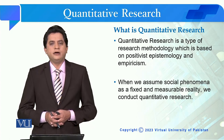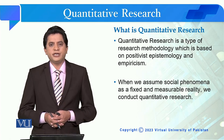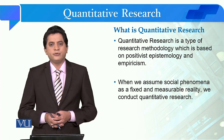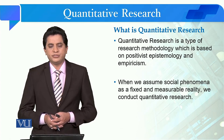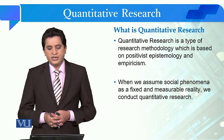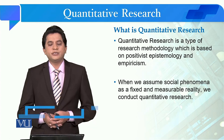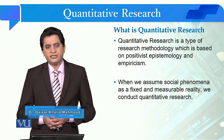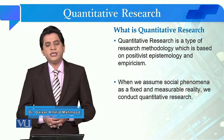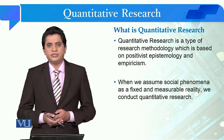As we have studied in previous lectures, social science research has various epistemologies. One of them is positivist epistemology — that just as matter can be studied, social phenomena can also be studied, and this is a fixed reality. By assuming this, we conduct quantitative research.